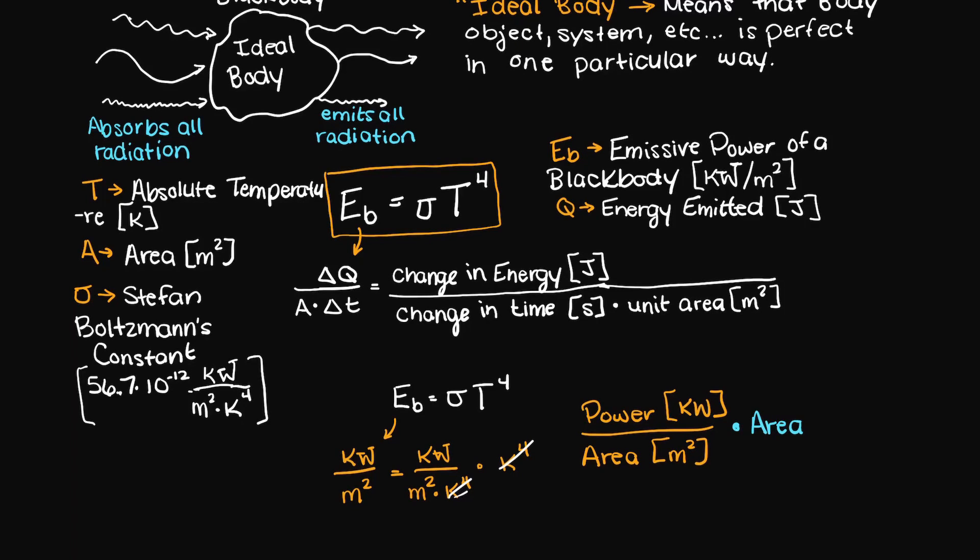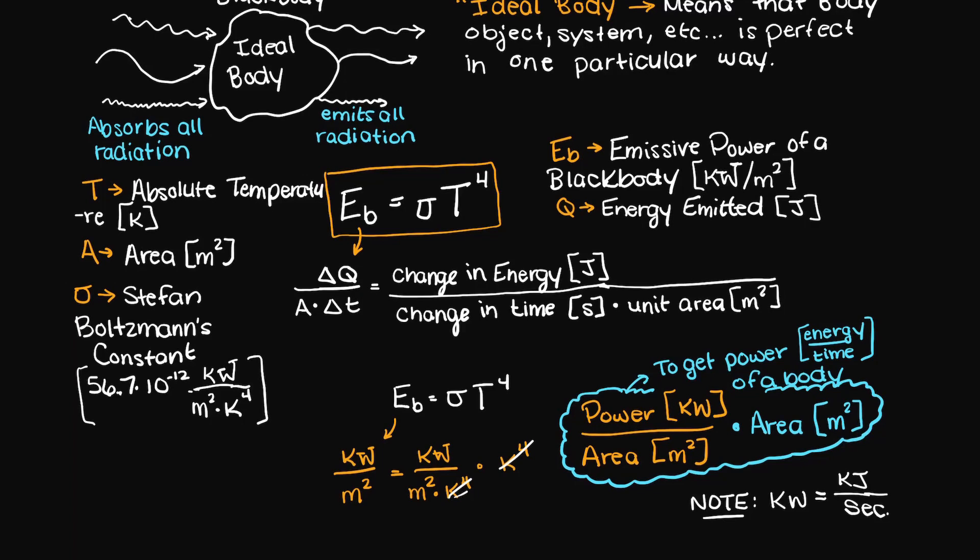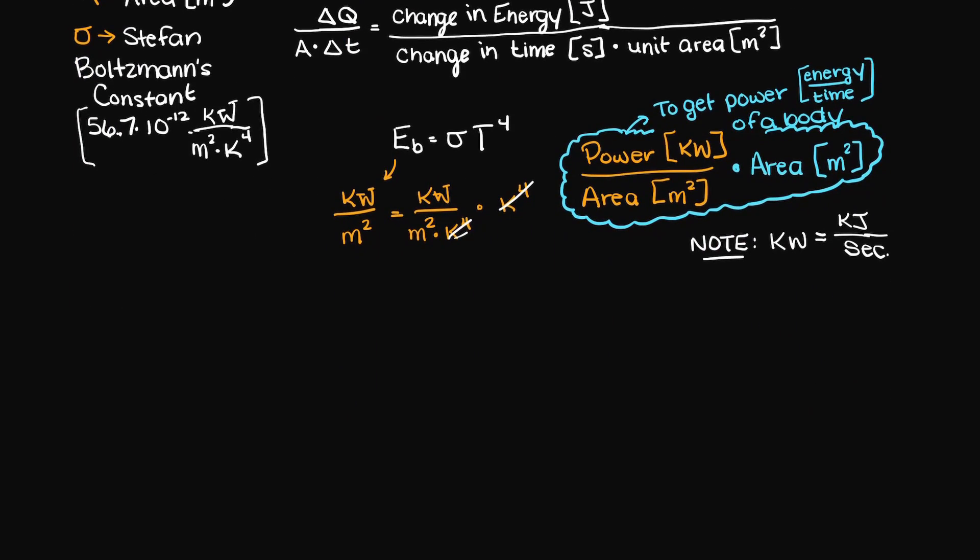Therefore, to find the rate at which energy is emitted by a given black body, you would just multiply the emissive power times the area of that body. This would just give you the units of watts, which to reiterate is just joules, so energy over time, seconds.